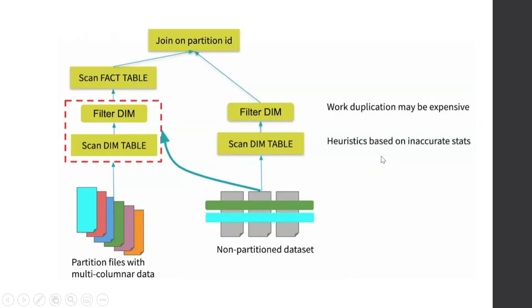How does Spark do it? There are two ways. First, it will do a filter and scan on the smaller, non-partitioned dimension table. It will get that filtered record and create a subquery, which will be applied on the partitioned fact table to filter the data before scanning. This filter data forms as a subquery here to filter the facts table. The part highlighted in red is actually the filter and scan that we did on the dimension table, which is now a subquery applied before scanning the fact table. However, doing this subquery may not be that efficient, as there can be some work duplication which is expensive.